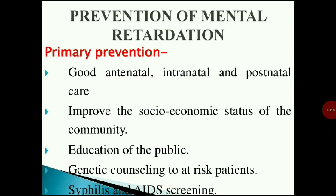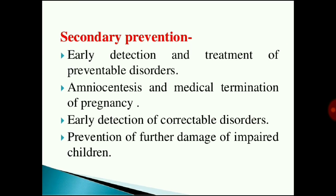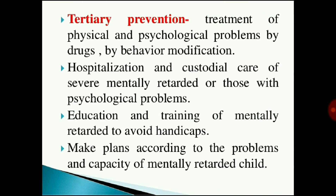Primary prevention includes good antenatal, intranatal, and postnatal care; improving socioeconomic status; public education; genetic counseling for at-risk patients; syphilis and AIDS screening; vaccination of girls with rubella vaccine; avoiding consanguineous marriage; and prevention measures to reduce child abuse, road traffic accidents, and home accidents. Secondary prevention includes early detection and treatment of preventable disorders, amniocentesis and medical termination of pregnancy, early detection of correctable disorders, and prevention of further damage in impaired children. Tertiary prevention involves treatment of physical and psychological problems.